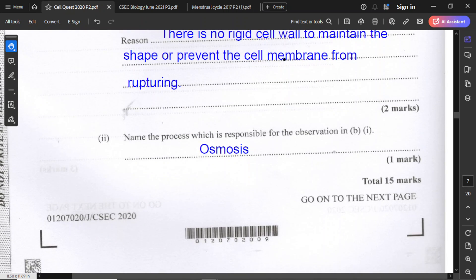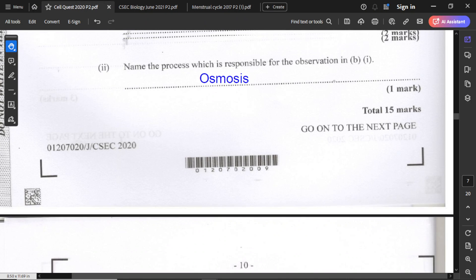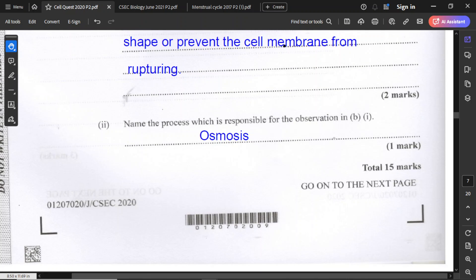Part two of section B is to name the process which is responsible for the observation in B1. This process is osmosis, water entering the cells. And that is the end of the question. Hope you do well on the examination. See you soon for more reviews.